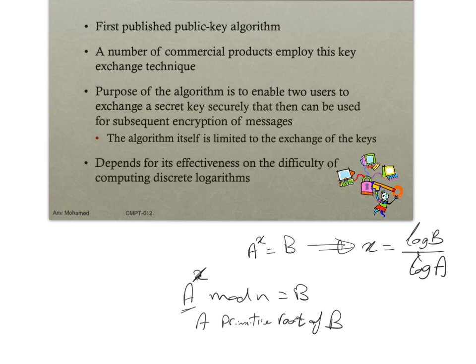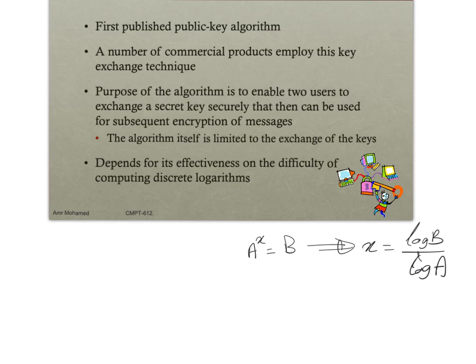For example, is 3 a primitive root of 5? In order to prove that 3 is a primitive root of 5, we compute: 3 to the power 1 mod 5 equals 3.